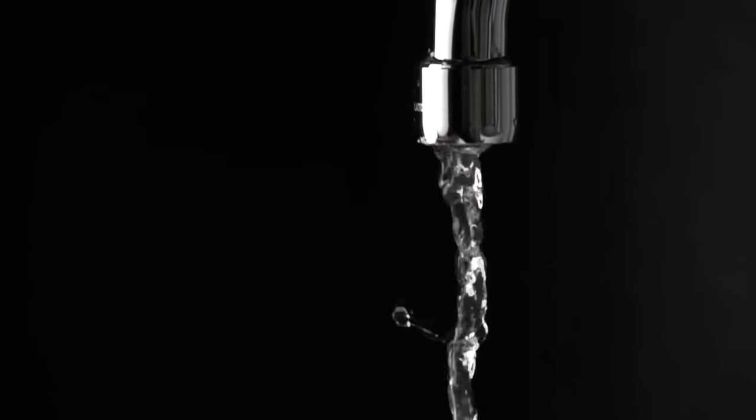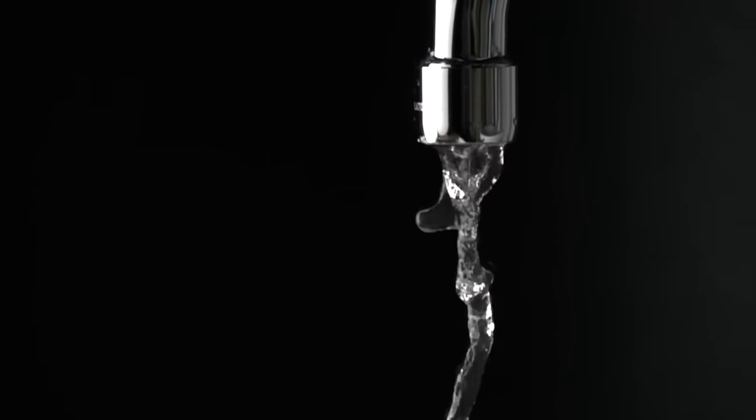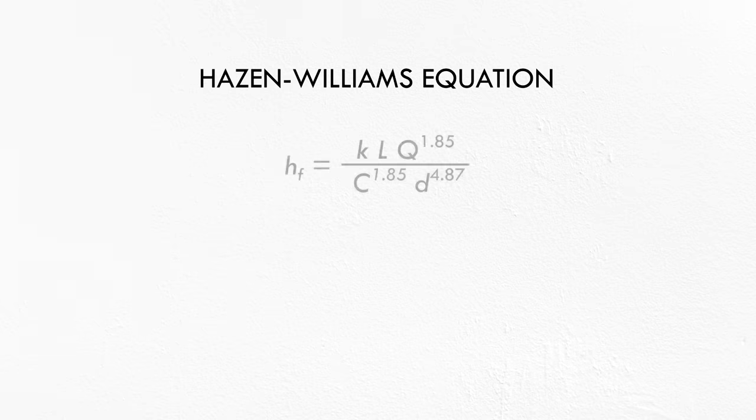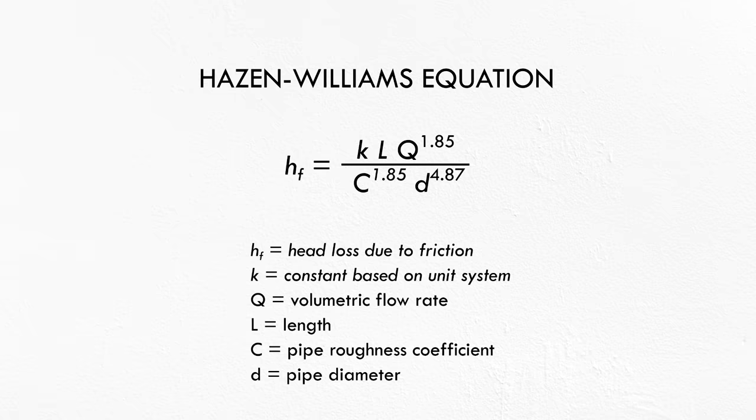There are a few methods engineers use to estimate the energy losses in pipes carrying water, but one of the simplest is the Hazen-Williams equation. It can be rearranged in a few ways, but this way is nice because it has the variables we can measure. It says the head loss, in other words the drop in pressure from one end of a pipe to the other, is a function of the flow rate and the diameter, length, and roughness of the pipe. Now, that's a lot of variables, so let's try an example to see how this works.